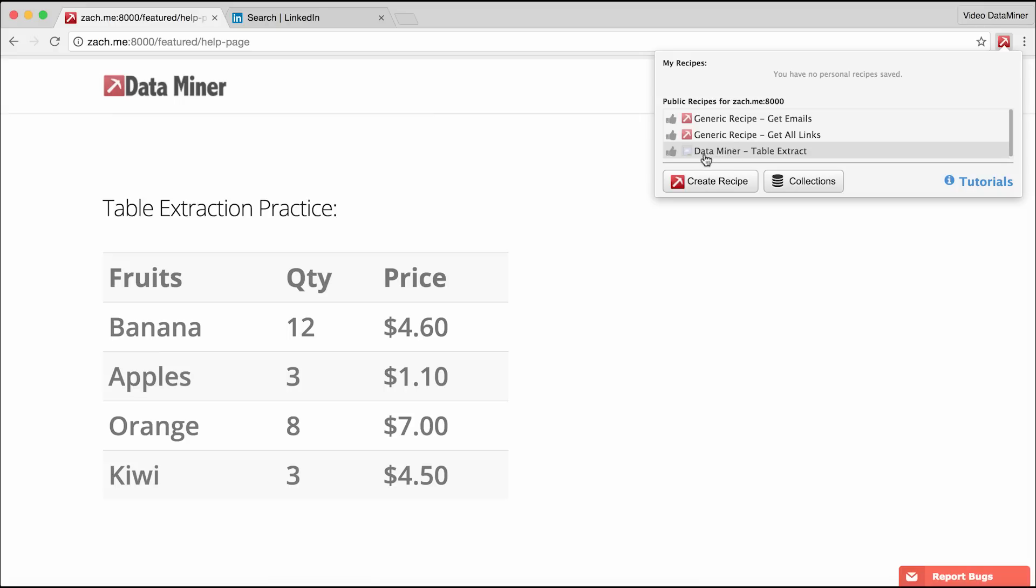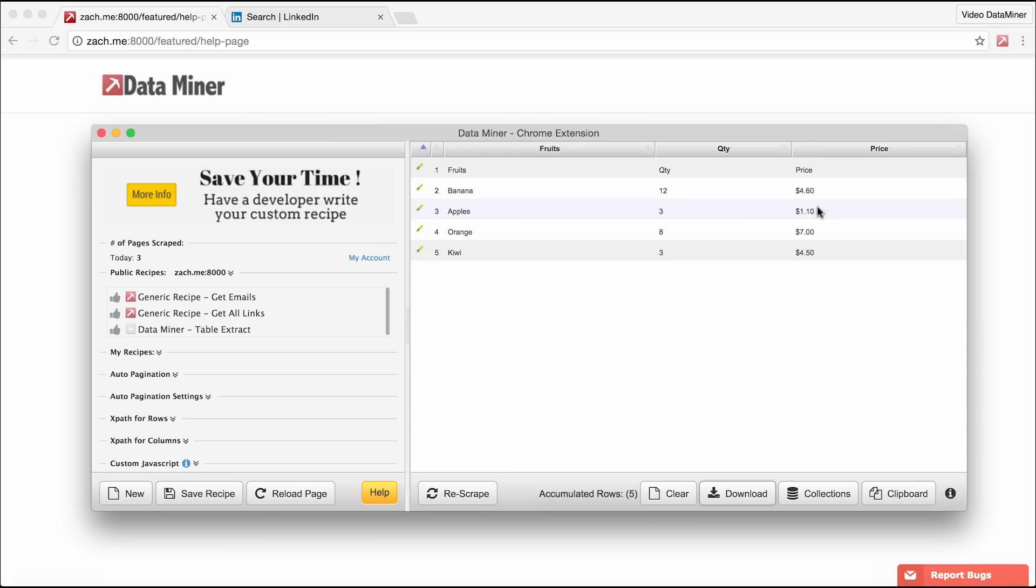So, since we are currently looking at a Dataminr page, we'll select a Dataminr recipe, and we want to capture a table, so we'll select Table Extract, let the recipe run, and then just like that, we've miraculously captured the data.